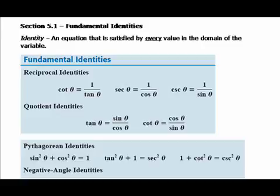What you're seeing right up front is a review of identities we've already talked about — we just haven't called them identities. An identity is an equation that's true for every single domain value you could plug in. When you solve an equation in algebra, you're coming up with specific values of x — maybe one value, or two for a quadratic. An identity is true no matter what x value we pick.